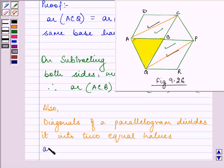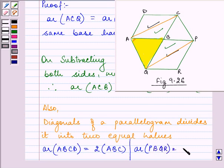So we can say that area of parallelogram ABCD is equal to twice area of ABC. That is area of ABCD is twice this area as the diagonal AC divides it into two equal halves. Similarly, area of PBQR is equal to twice area of QBP.